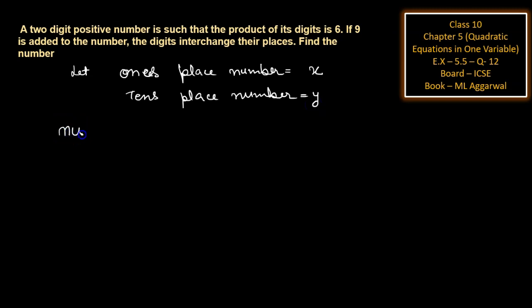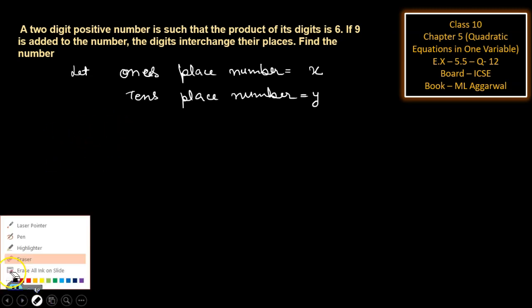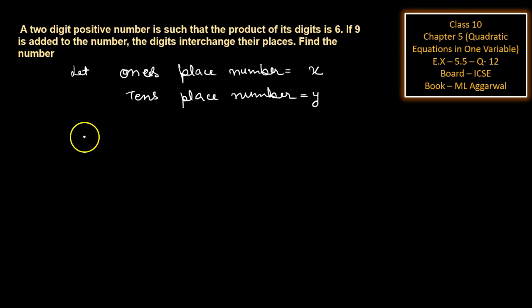So the number will be: the ten's place multiplied with 10 and the one's place multiplied with 1. So number is equal to 10y plus x.